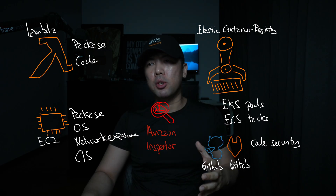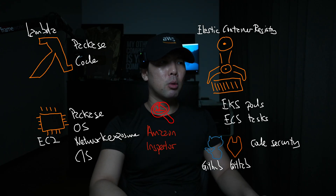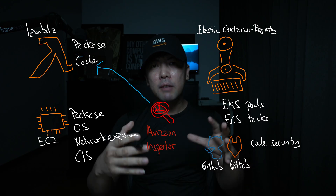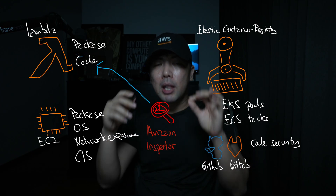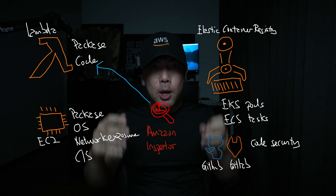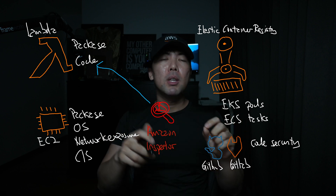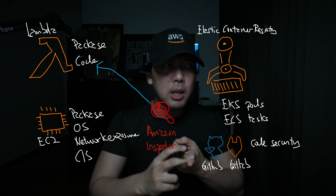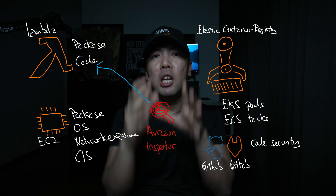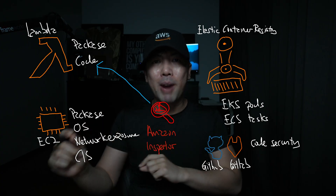The first targeted resource is the Lambda function. Lambda is a serverless service that allows you to simply put your code — Python, Node.js, and so on — and execute it. Amazon Inspector can do a package scan against the layer or inside the Lambda function, and also check for code vulnerabilities, ensuring secure coding practices.